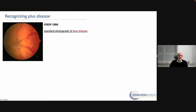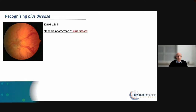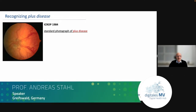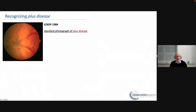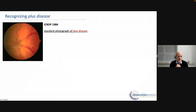How can we recognize PLUS disease — this change in the vessel patterns? Initially, this was done using a standard photograph from the iCrop publication back in 1984, which defined what PLUS disease is: a change in the vascular pattern at the posterior part of the eye. Different doctors would compare what they see to this standard photograph and then discuss whether the patient has enough PLUS disease to trigger treatment. This is not ideal today, because there's a lot of subjectivity in defining what PLUS disease is and what it is not.